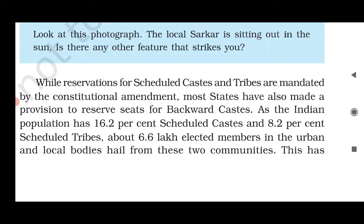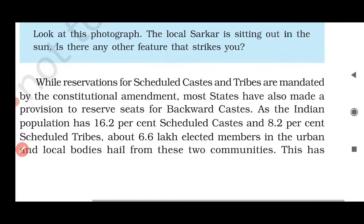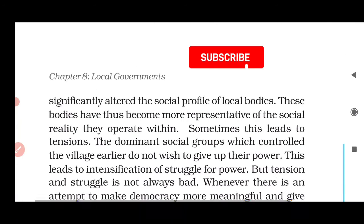Regarding Scheduled Castes and Scheduled Tribes — reservation mandated by the constitutional amendment — most states have also made provision to reserve seats for backward classes. There is 16.2% reservation for Scheduled Castes, 8.2% for Scheduled Tribes, and about 6.6 lakh elected members from these two communities in rural and urban bodies.